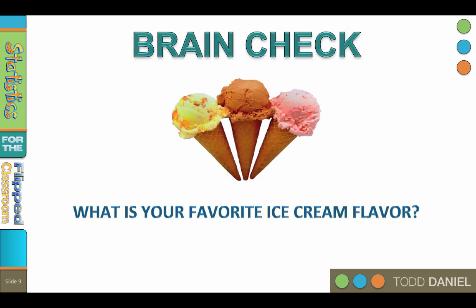The mode is most commonly used with nominal data. For example, if we took a poll of a class asking what flavor of ice cream do you prefer, one flavor would be the most popular. That most frequently chosen flavor would be the mode.